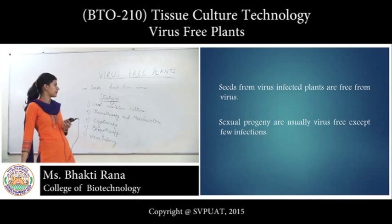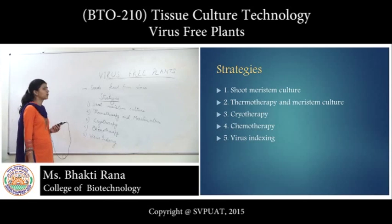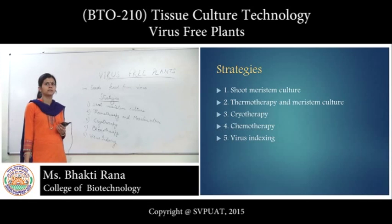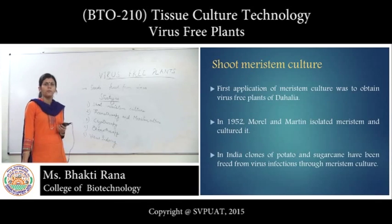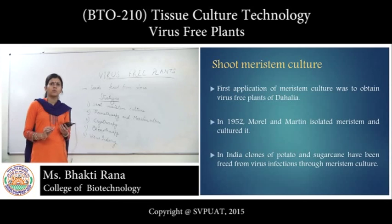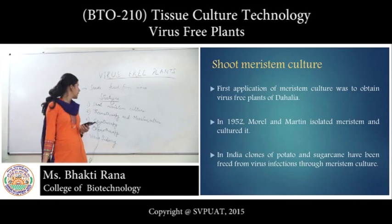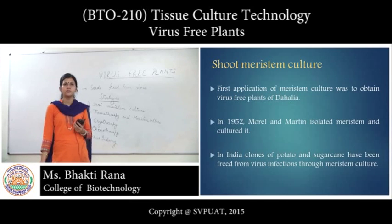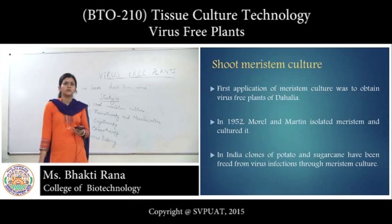There are different strategies: first is shoot meristem culture, then thermotherapy and meristem culture, then cryotherapy, then chemotherapy, and then virus indexing. The first we will discuss is shoot meristem culture. The meristem is a site where viruses are present in a very small amount — very little viruses are there, so they are freed from virus. The meristem is in an active stage. In 1952, Morel and Martin first used meristem culture for the production of plants. This is the most widely used technique and it is used for sugarcane and potato in India.